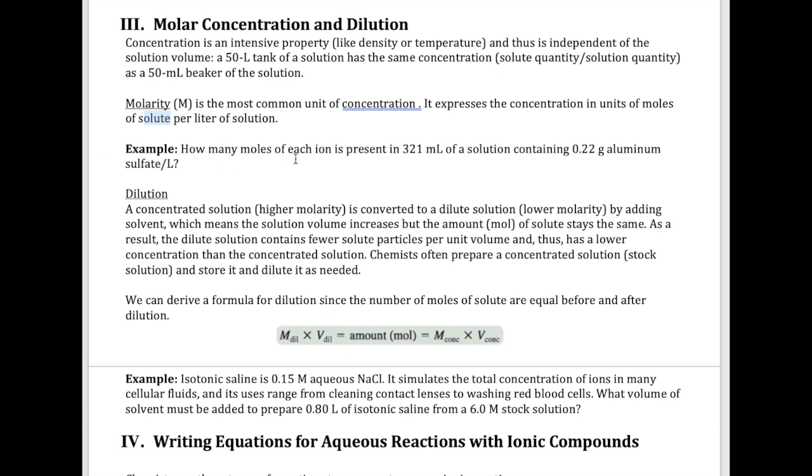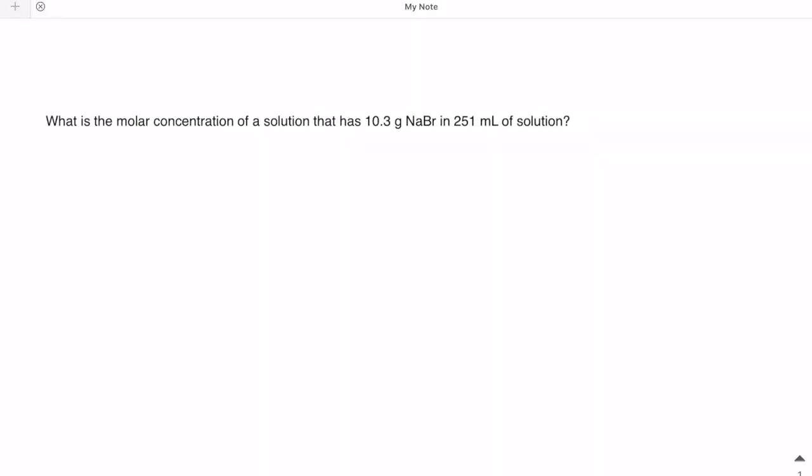You need to know how to calculate molarity if you are given volume and number of moles or convert them to moles. Let's look at a question about molarity. What's the molar concentration of a solution that has 10.3 grams sodium bromide in 251 milliliters of solution? The key is to remember that one molar, with unit capital M, equals one mole per liter. We need to convert the units to moles per liter.